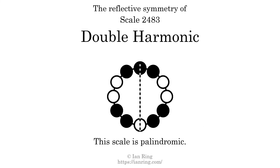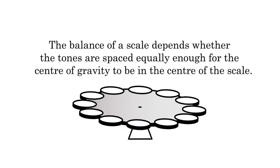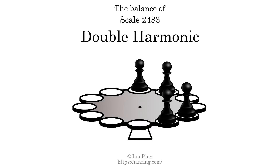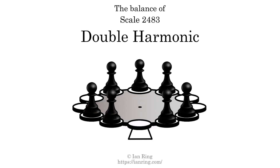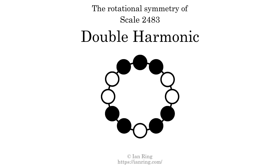This scale has reflective symmetry across an axis positioned at the root tone. This scale has the same pattern of intervals both ascending and descending, so we call it palindromic. This scale has one ridge tone. This scale is balanced. The inverse of a scale is a mirror image — it is what you get when the sequence of intervals is reversed. This scale is symmetrical; its inverse is the same as itself. Like all symmetrical scales, this scale is achiral, since it can transform into its own reflection by a rotational transformation. This scale has no rotational symmetry.